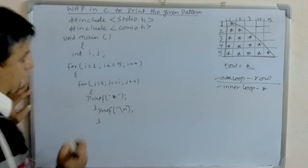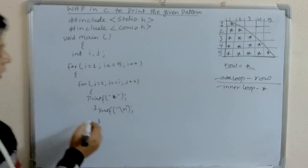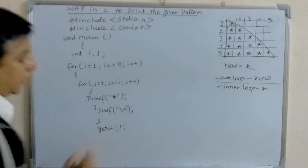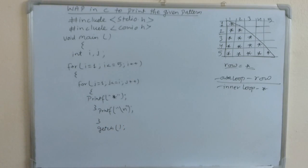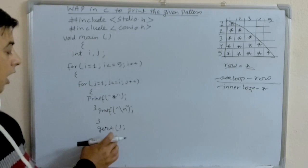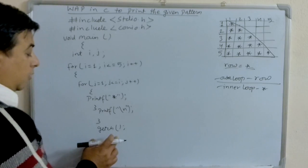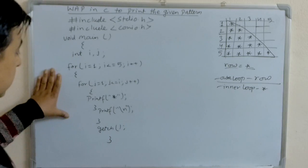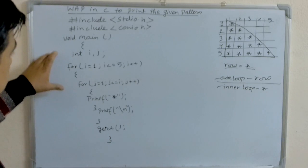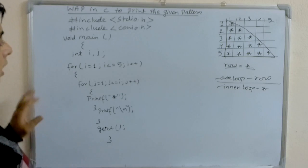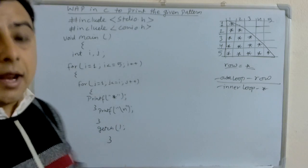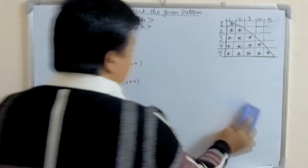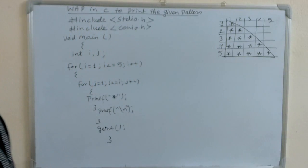We have to close the outer loop. After closing the outer loop, we use the function getch(). The getch() function is used to hold the output until we press any key. Then we close the main function. Now, when you compile and run the program, let's see how the output comes.